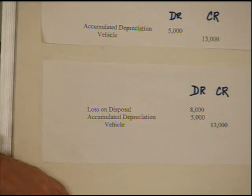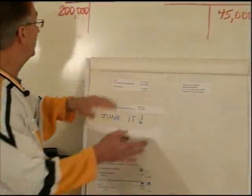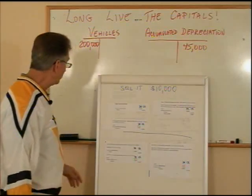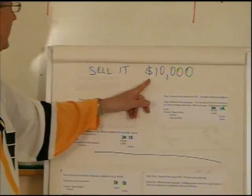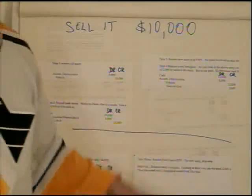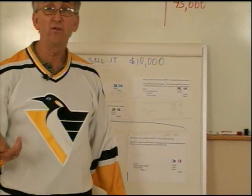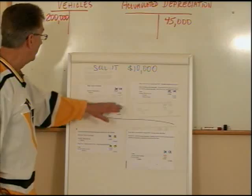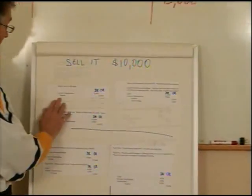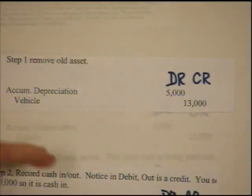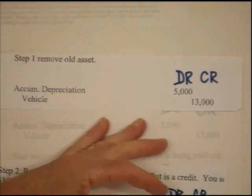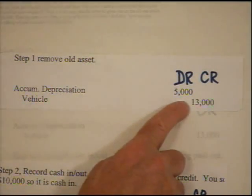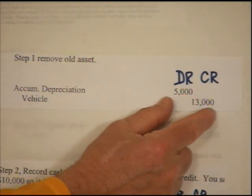Now let's look at a sale. The first example is a sale at $10,000. The book value of the asset is $8,000, so if we get more than that it's a gain — and $10,000 is more, so we expect a gain of $2,000. Following the steps: Step 1, remove the old asset — debit accumulated depreciation $5,000, credit vehicle $13,000. This is the same removal entry every time, whether we junk it, sell it, or trade it in. We're now out of balance by the book value.